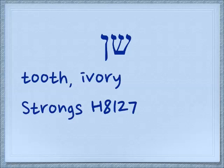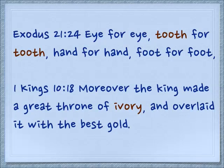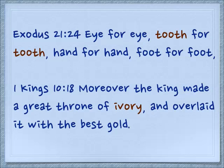Together these two letters spell Shin, which means tooth or also ivory. You can understand how it could go from tooth to ivory, since ivory is made out of animal tooth. We find it in Exodus 21:24 — 'Eye for eye, tooth for tooth, hand for hand, foot for foot.' And in 1st Kings 10:18 — 'Moreover the king made a great throne of ivory and overlaid it with the best gold.'